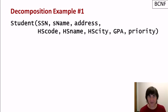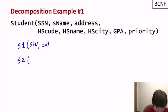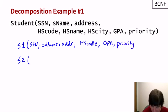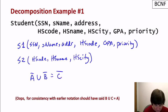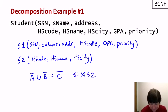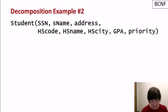Let's look at two possible decompositions of the student relation. In the first decomposition, S1 contains SSN, name, address, high school code, GPA, and priority; S2 contains high school code, high school name, and high school city. All attributes are still present, and S1 join S2 — joining on high school code — will equal student for expected data. This is a correct decomposition.